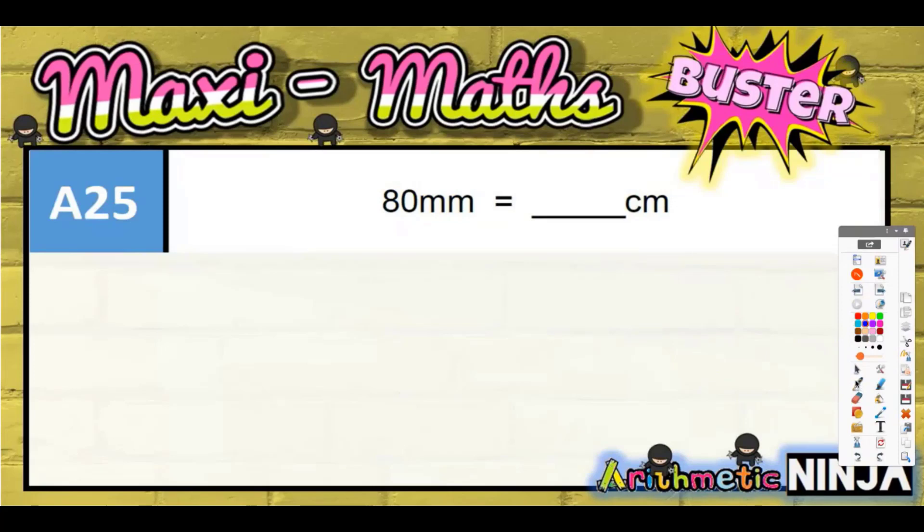Question 25: millimeters and centimeters. You need to understand there is a special relationship between centimeters and millimeters, and you need to know that. You need to be able to work both ways - you need to be able to turn centimeters into millimeters and backwards, millimeters into centimeters.